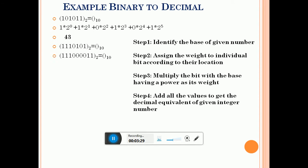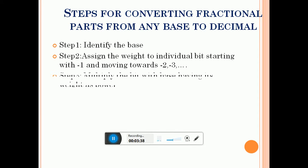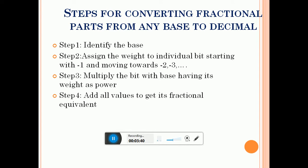Now we will learn the steps for converting the fractional part from any base to decimal. Step 1: identify the base. Step 2: assign the weight to individual bits starting with minus 1 and moving towards minus 2, minus 3, as per the number of bits. Step 3: multiply the bit with the base having its weight as the power. Step 4: add all the values to get the fractional decimal equivalent.